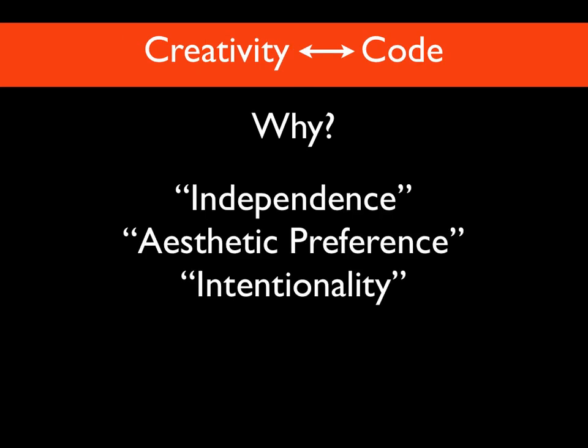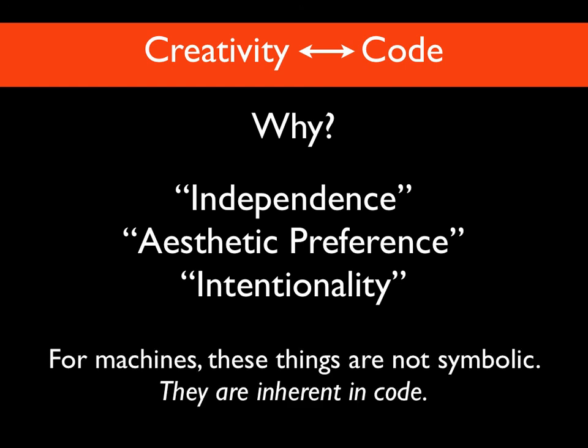When we talk about the really juicy concepts in computational creativity - things like independence, aesthetics, or intentionality of a system - those things are not going to come out of abstract grammars and plugging together puzzle pieces. They are things I believe can only come from the code itself, from the lowest level possible, the level we are working at. In order for our systems to express these things, we need them to start writing code themselves.